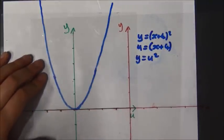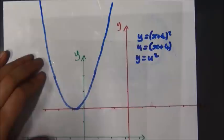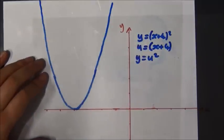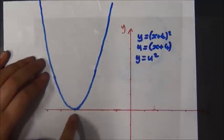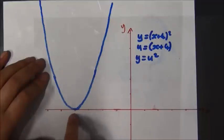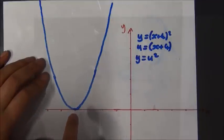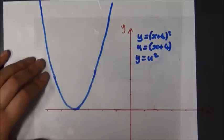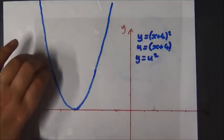And when I take away this green set of axes, you can see that my graph has now moved to the left and now touches at negative 4. So although intuition might have suggested that it moves to the right, it actually moves to the left.